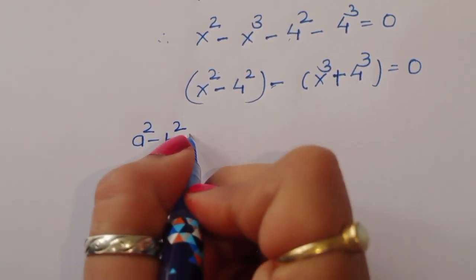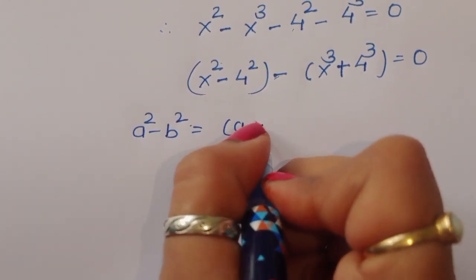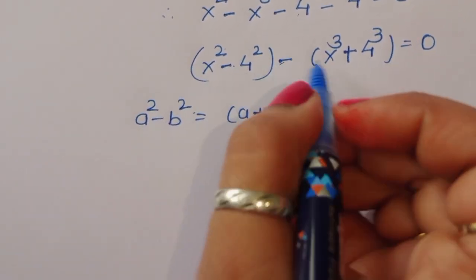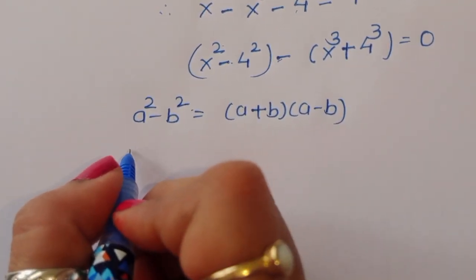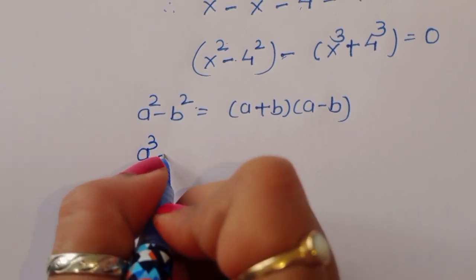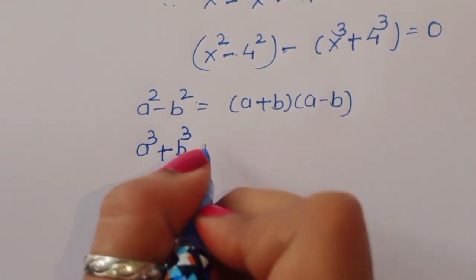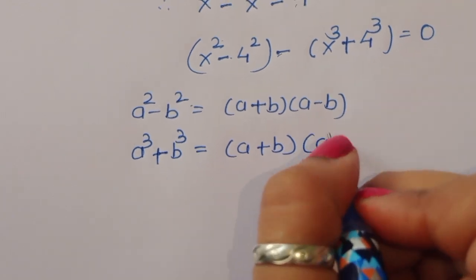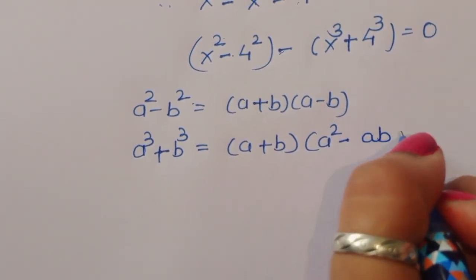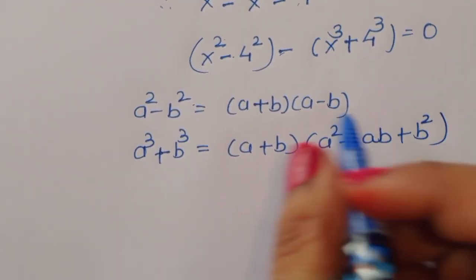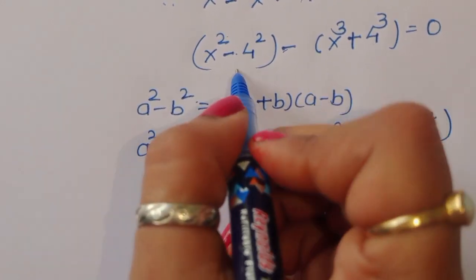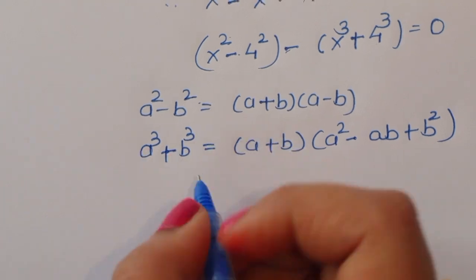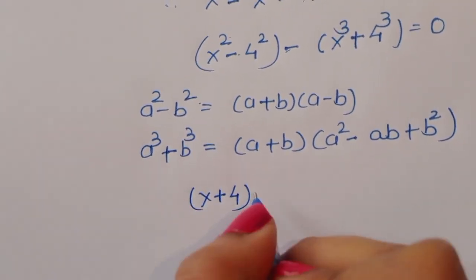The first formula is: a squared minus b squared equals (a plus b)(a minus b). The second formula is: a cubed plus b cubed equals (a plus b)(a squared minus ab plus b squared). We will apply both of these formulas here.